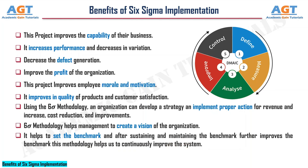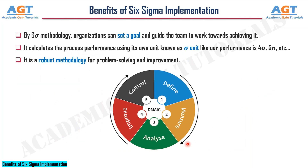By Six Sigma methodology, organizations can set a goal and guide the team to work towards achieving it. It calculates process performance using its own unit known as the Sigma unit — for example, a performance of 4 Sigma or 5 Sigma. It is a robust methodology for problem solving and improvement.